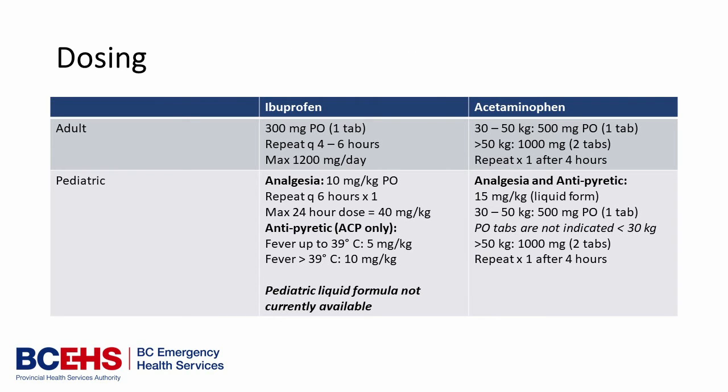The adult dosing for ibuprofen is straightforward — we're currently stocking it in 300 milligram tablets, and that will be the dose for every adult. That can be repeated every four to six hours as needed for pain. The pediatric dosing — although we're not currently stocking the liquid formula — when it does become available, the analgesic dose is 10 milligrams per kilogram, which can be repeated once at the six-hour mark if needed.